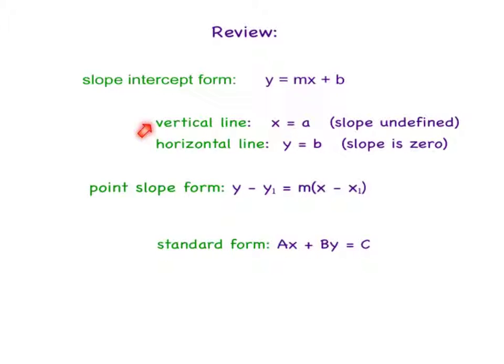We also know vertical lines and horizontal lines. A vertical line is always going to be x equals, and it goes through the number on the x-axis. y equals is a horizontal line, it goes through the number on the y-axis. An x equals any number has an undefined slope, where a y equals or a horizontal line has a zero slope.